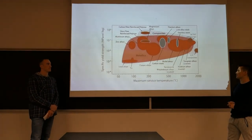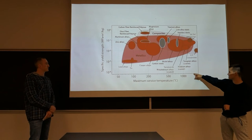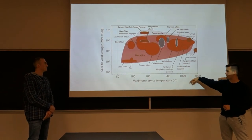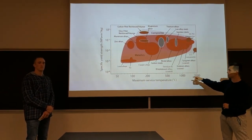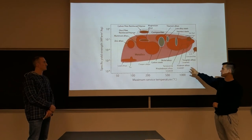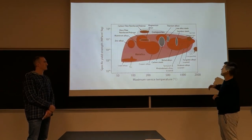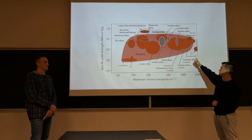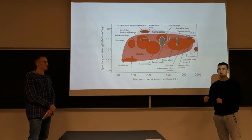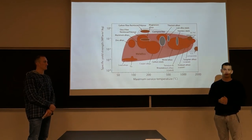This graph here shows that as temperature increases — which is where you find the higher Mach regimes in hypersonic travel — the specific yield strength of different materials starts to change. That's where you see how composites and different alloys are being used, because they're the only materials currently available that can handle these different stresses and strains.